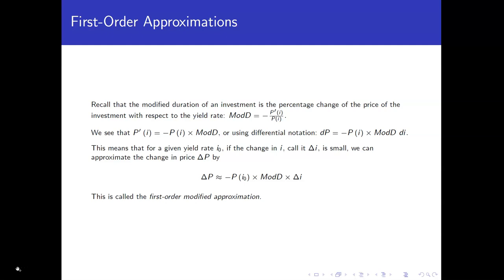Let's recall that the modified duration is a percentage change. So it's the change in the price of the asset for a particular yield rate divided by the price of that asset for that interest rate, that yield rate. And of course, since we know that as the interest rate goes up, the price goes down, we take the negative of that because we would like the modified duration to be a positive number.